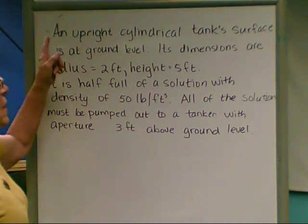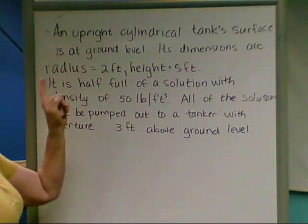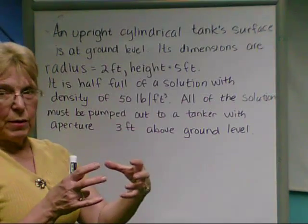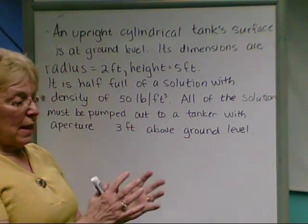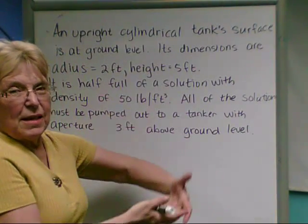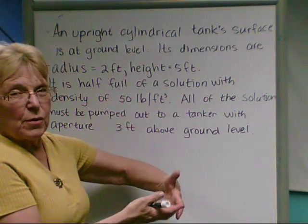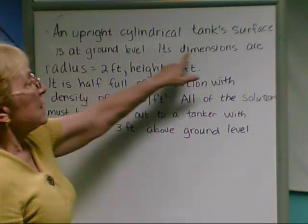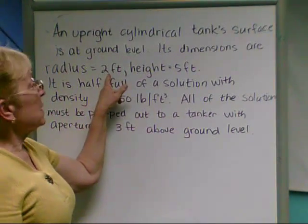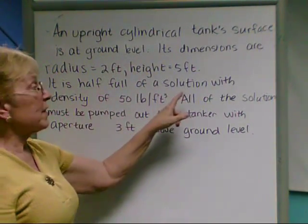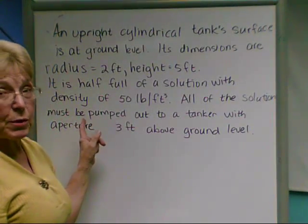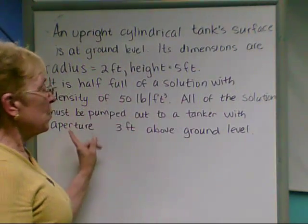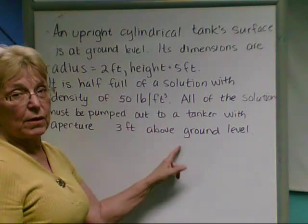So the situation is we have an upright cylindrical tank whose surface is at ground level. Its dimensions are radius 2 feet, height 5 feet, and it is half full of a solution with a density of 50 pounds per cubic foot. All the solution must be pumped out to a tanker with an aperture 3 feet above the ground level.